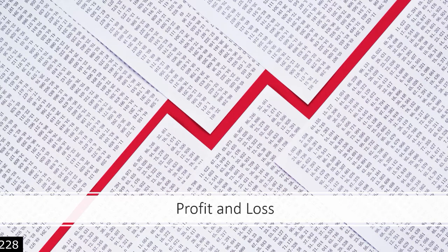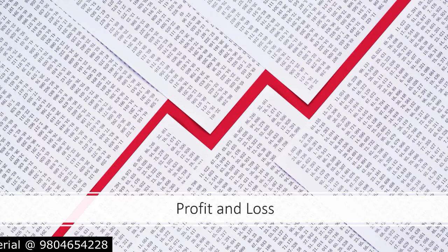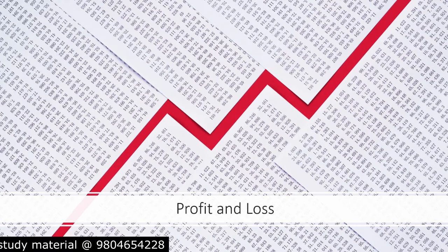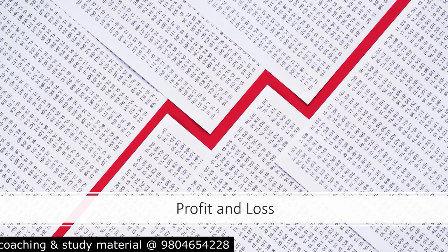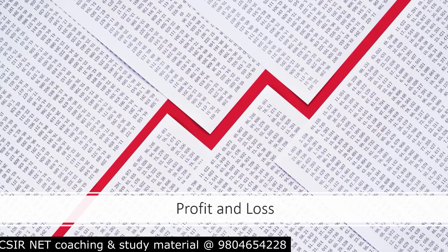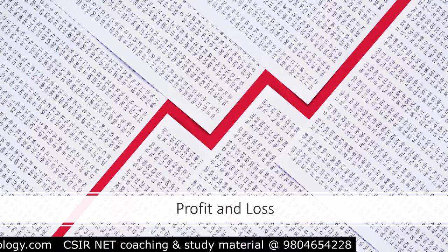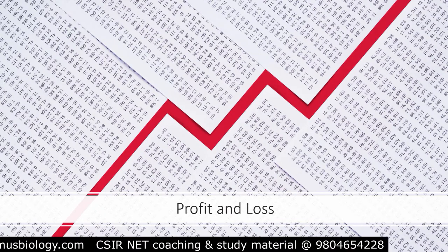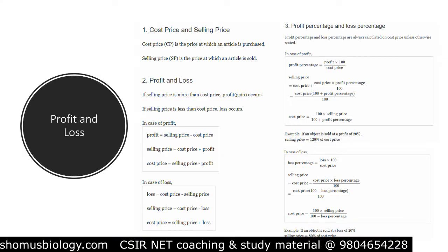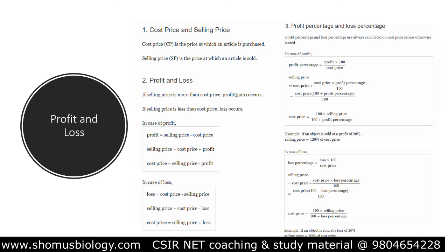We'll be solving profit and loss problems, seeing the theory behind profit and loss. There are formulas regarding cost price and selling price. Cost price is known as CP, selling price as SP. We can easily find out profit or loss: if cost price is more than sell price there is a loss, if cost price is less than sell price there is profit. We also need to calculate the percentage of profit and loss, and discount values over MRP.